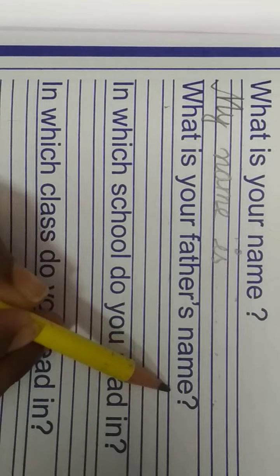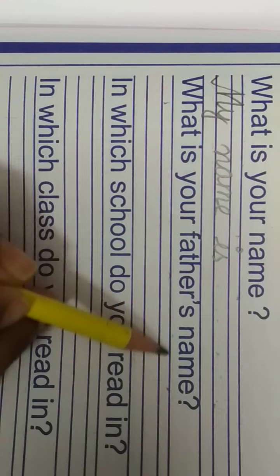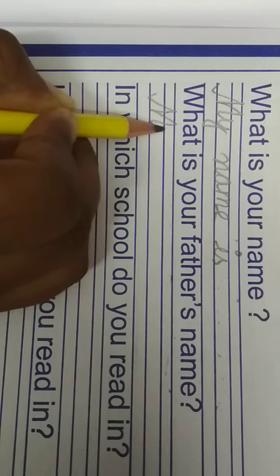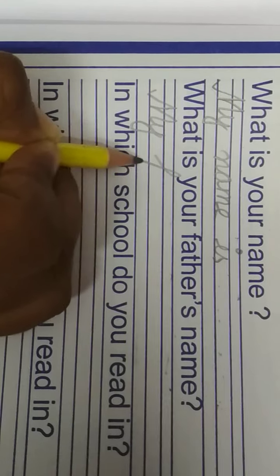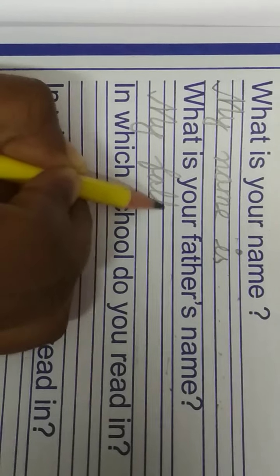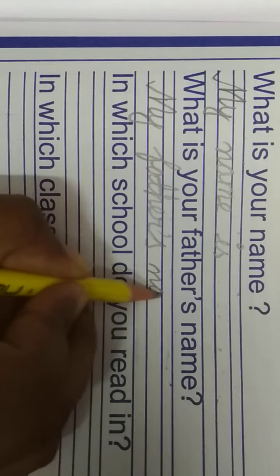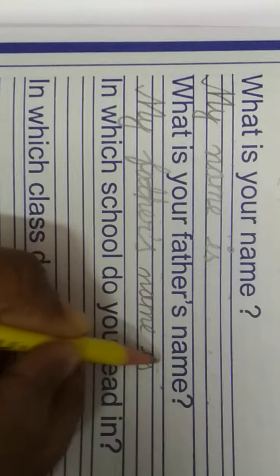Then the next question: What is your father's name? Again you will write your father's name. But first you will write like this: My father's name is — then you will write your father's name.